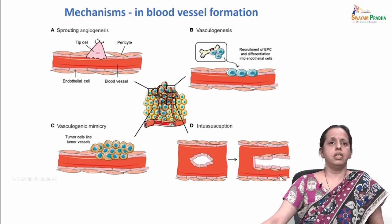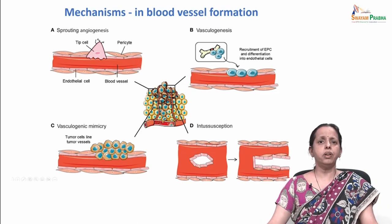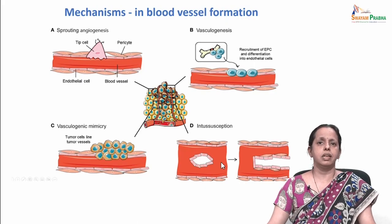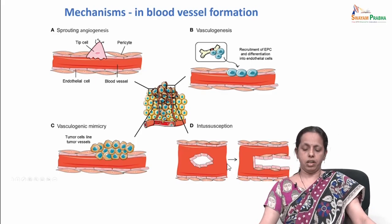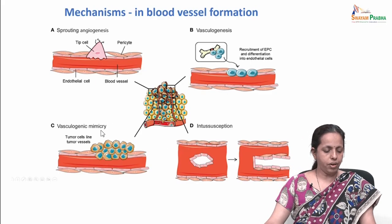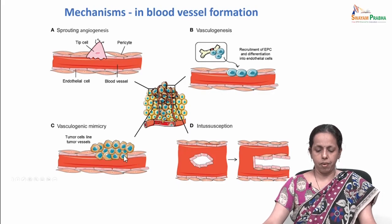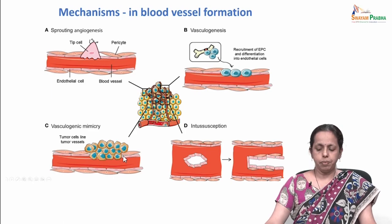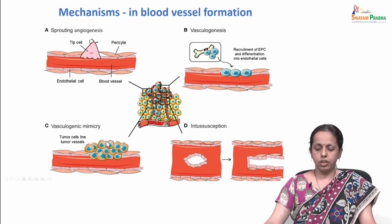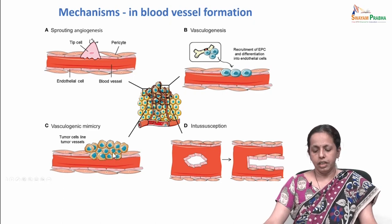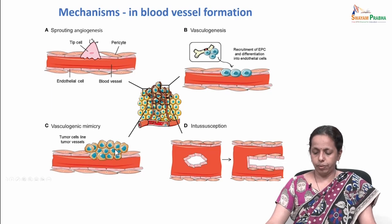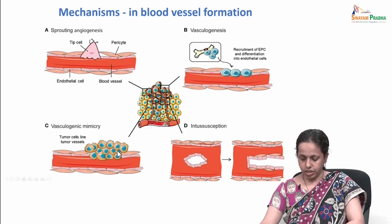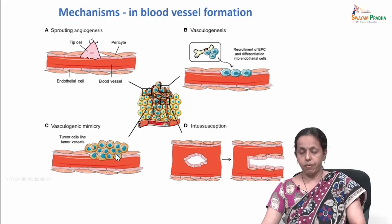Vessel intussusception involves the development of an intravascular growth mechanism — splitting of pre-existing vessels into new vascular structures — first described in the modeling of lung capillaries. Vasculogenic mimicry refers to the ability of some malignant tumor cells to undergo a de-differentiation process to adapt to multiple cellular phenotypes, including endothelial-like properties. These cells converge into de novo vasculogenic-like networks composed of red blood cells that are able to contribute to circulation.